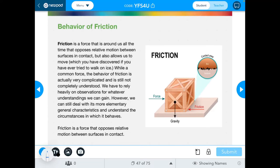Continuing where we left off before, we were talking about the four basic forces, and this is going to be the last bit of information for forces in general before we get into circular motion. So here we are looking at friction. Friction is a force that is around us all the time that opposes relative motion between surfaces in contact. But it does sometimes allow you to move. It depends on the type of friction we're looking at.